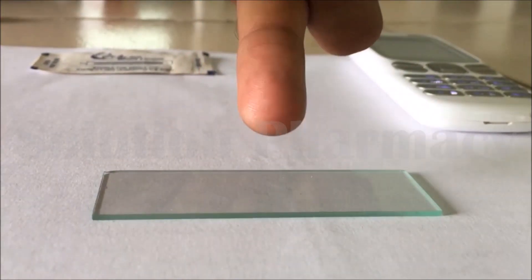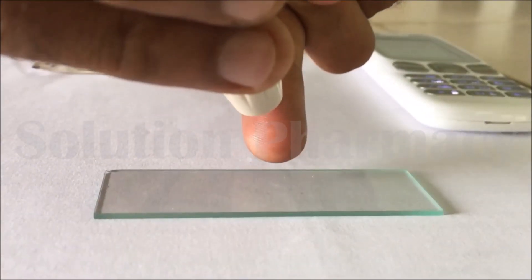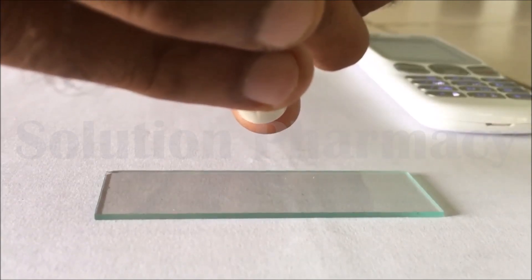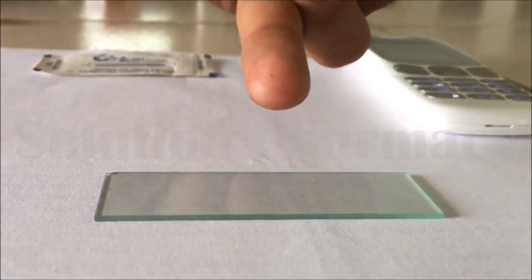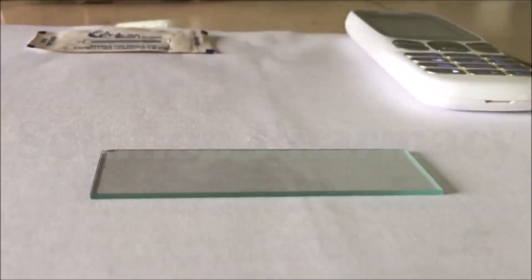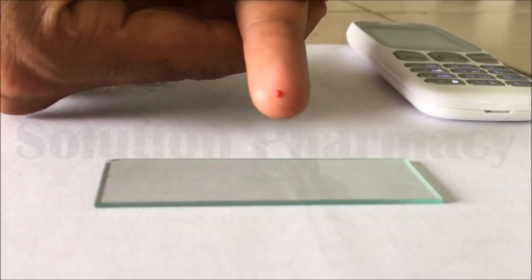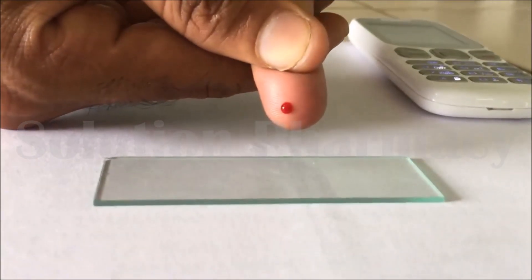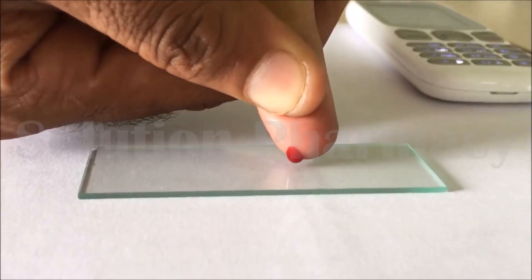After sterilizing fingertip, prick the fingertip with the help of pricker pen which has lancet inside it. After pricking, we will obtain free flowing blood. Immediately pour this blood drop on the slide and start the stopwatch. Note the time.